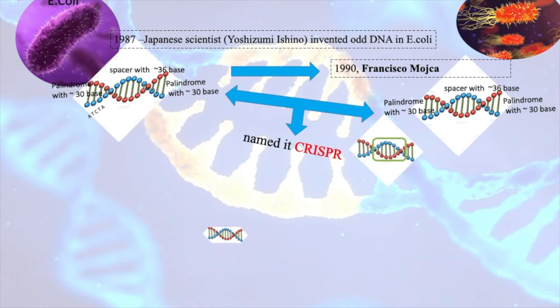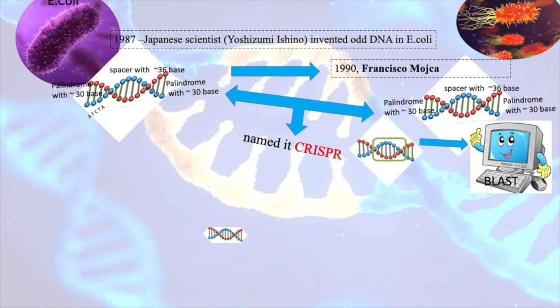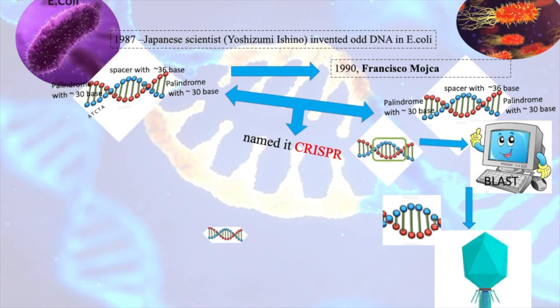He didn't stop there. He tried to isolate the spacer and run it in a bioinformatic tool called BLAST — a tool that acts like a library storing information on various organisms. By running the spacer through BLAST, he was able to find out the source of this DNA. The report showed that this spacer belonged to a virus — specifically a phage virus.